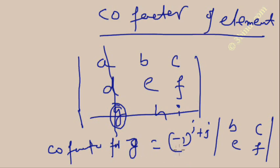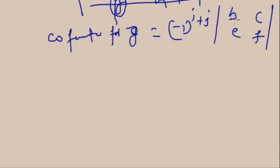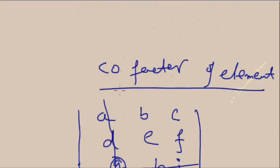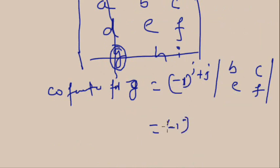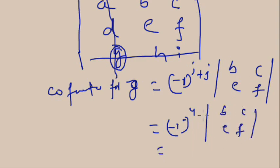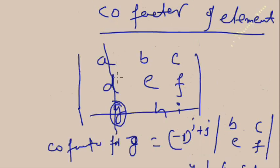In this way you can find the cofactor. For element G, which is in the first column and third row, i plus j equals 1 plus 3 equals 4. So the sign is minus one to the power 4, which is plus. The remaining elements after removing that row and column are B, C, E, F. The determinant is B·F minus C·E. So the cofactor for G is B·F minus C·E.